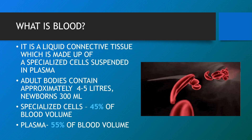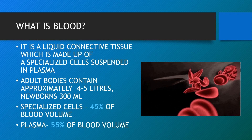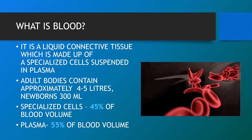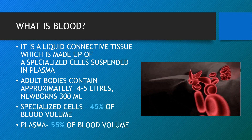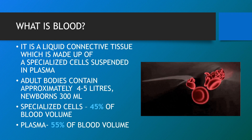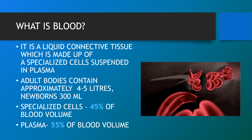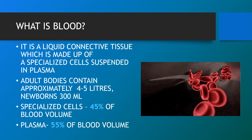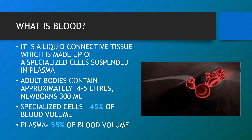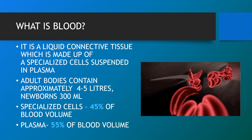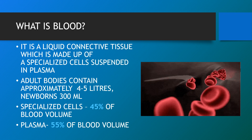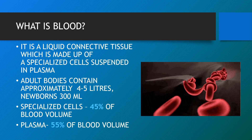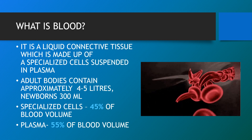Blood is a liquid connective tissue which is made up of specialised cells suspended in plasma — a fluid that transports oxygen and nutrients to the cells and carries away carbon dioxide and other waste products. Blood is both a tissue and a fluid: it is a tissue because it is a collection of similar specialised cells that serve particular functions, and those cells are suspended in a liquid matrix called plasma. Adult bodies contain approximately 4.5 litres of blood; newborns 300 ml. Specialised cells make up 45% of blood volume and plasma 55%.